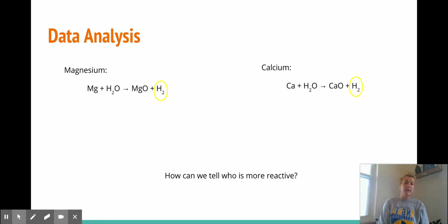So what is our data analysis going to look like? Ultimately, we are recording H2 that's being produced for each chemical reaction. So when magnesium reacts with water, it makes this thing called MgO, which is magnesium oxide and hydrogen gas. And then for calcium, it's the same reaction, except you're making calcium oxide and hydrogen gas. So the question is, who makes more H2 faster, right? And then that's telling us who is more reactive.